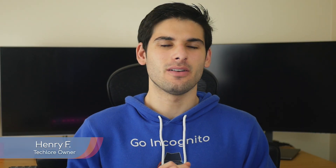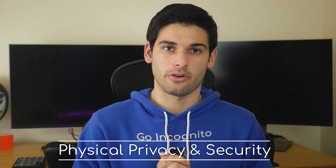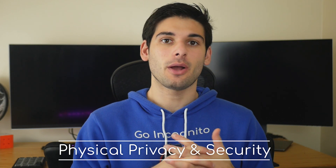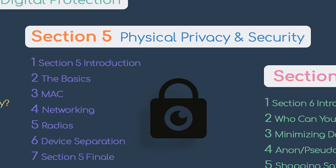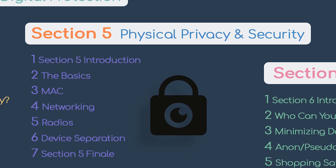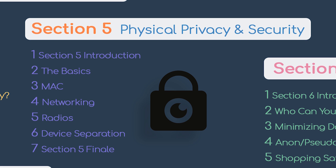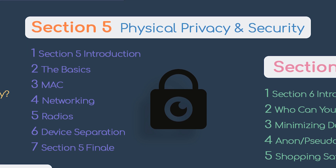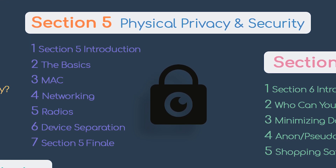Welcome to section 5 of Go Incognito: Physical Privacy and Security. Throughout the section, you're going to learn about the basics of physical protection like taping up webcams, disabling microphones, encrypting your devices, changing your MAC address, disabling radios on your devices, managing your routers, and much, much more.